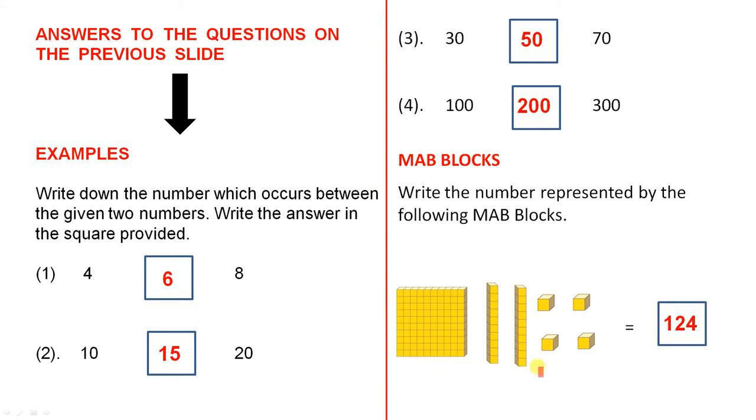And these MAB blocks. So here we have 100. That's the flat. Here we have 10 and another 10. So altogether that's 20. So those two there represent 20: 1, 2, 3, 4. So we add those numbers.